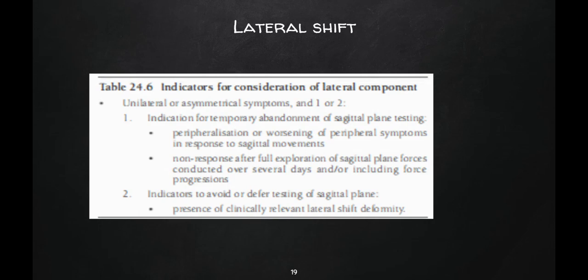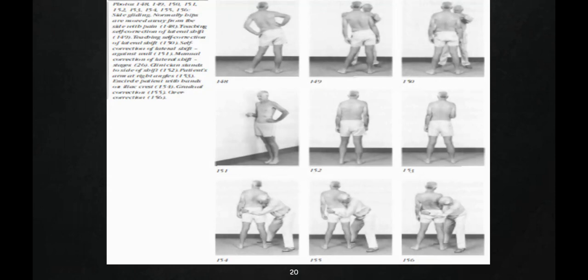For the lateral component, indicators include unilateral or asymmetrical symptoms. Temporary abandonment of sagittal plane testing is indicated when peripheralization or worsening of peripheral symptoms occurs in response to sagittal movements, or when there is non-response after full sagittal plane force progression over several days. Testing of sagittal plane is deferred when a clinically relevant lateral shift deformity is present. As shown in the picture, the patient can stand against the wall and perform shift correction, or the therapist can apply hands-on correction of the lateral shift deformity.